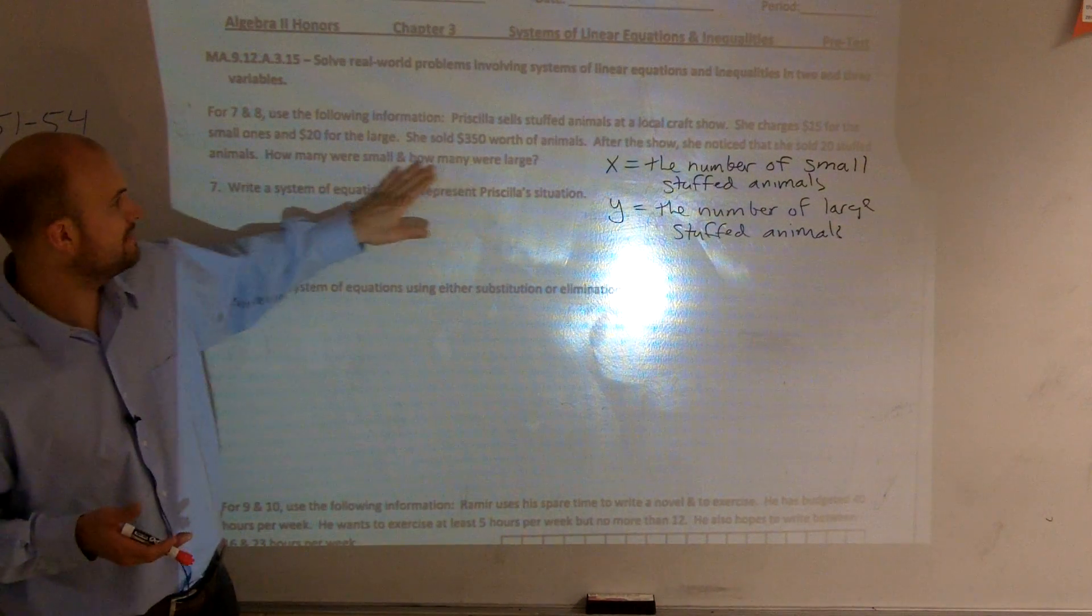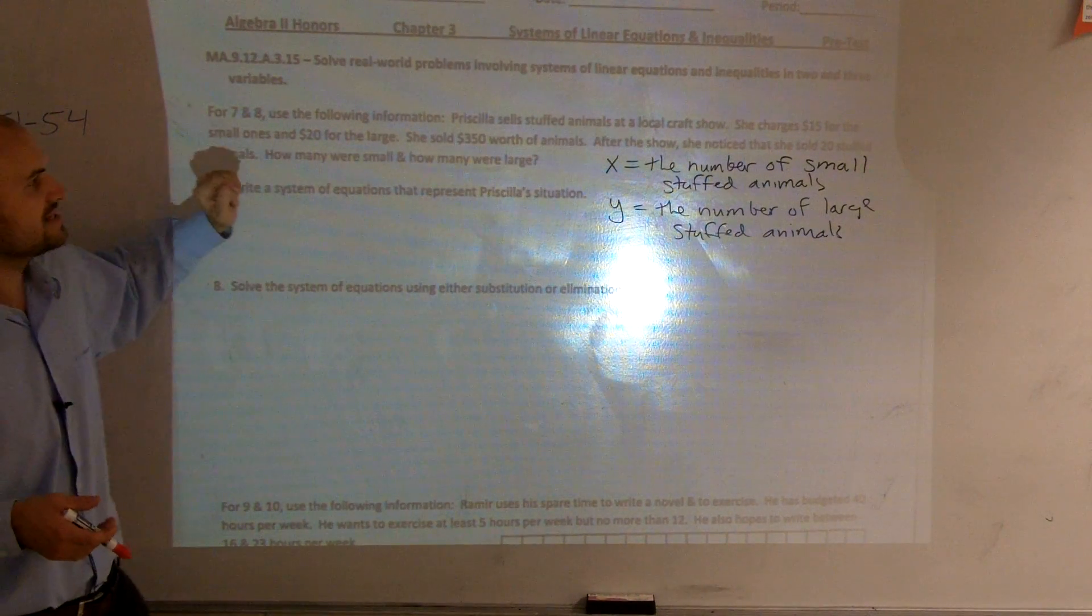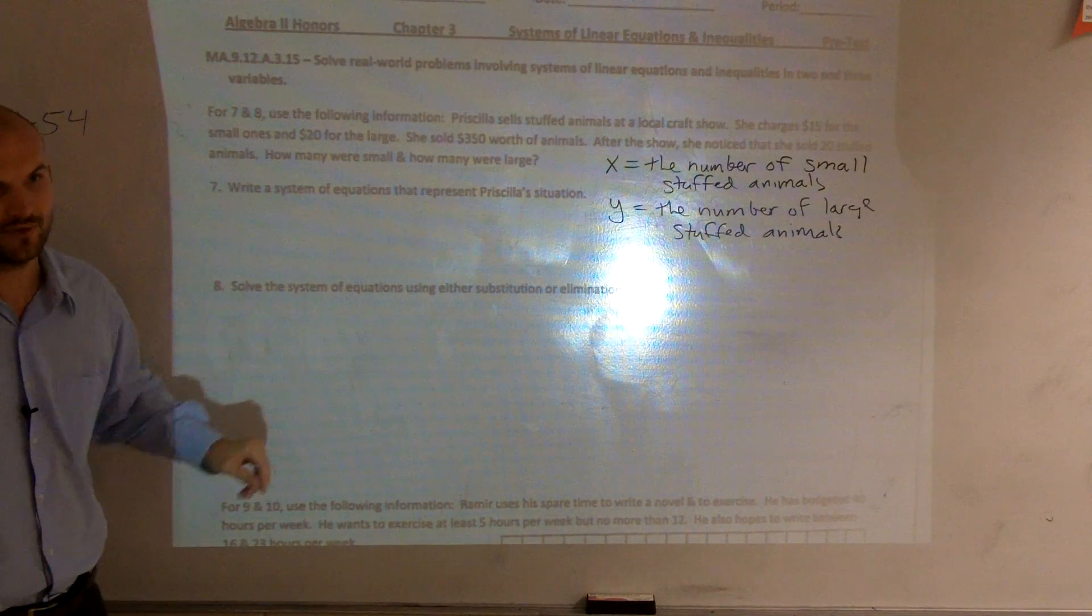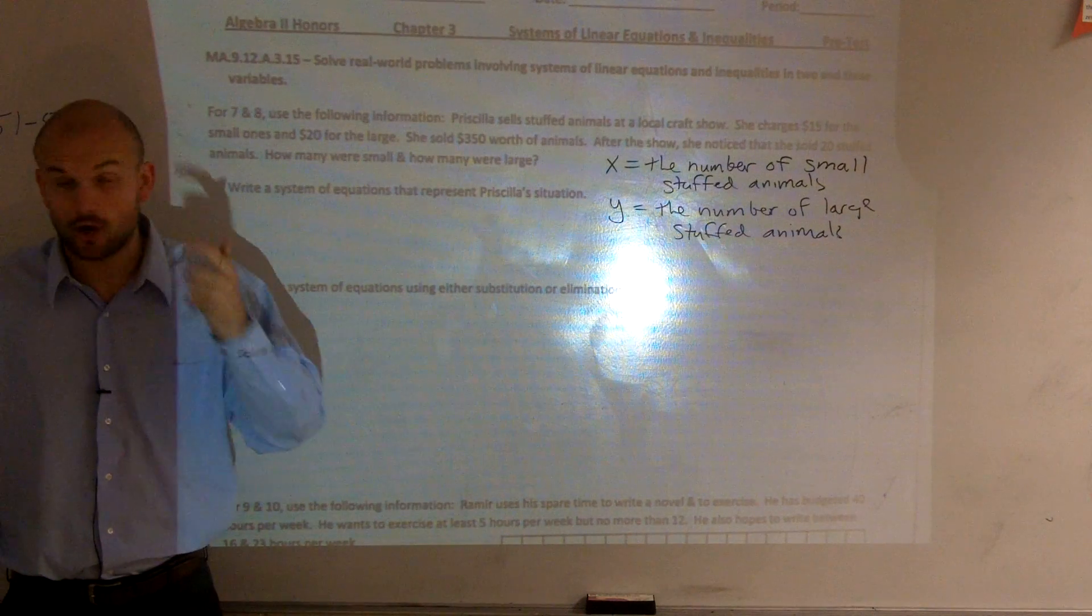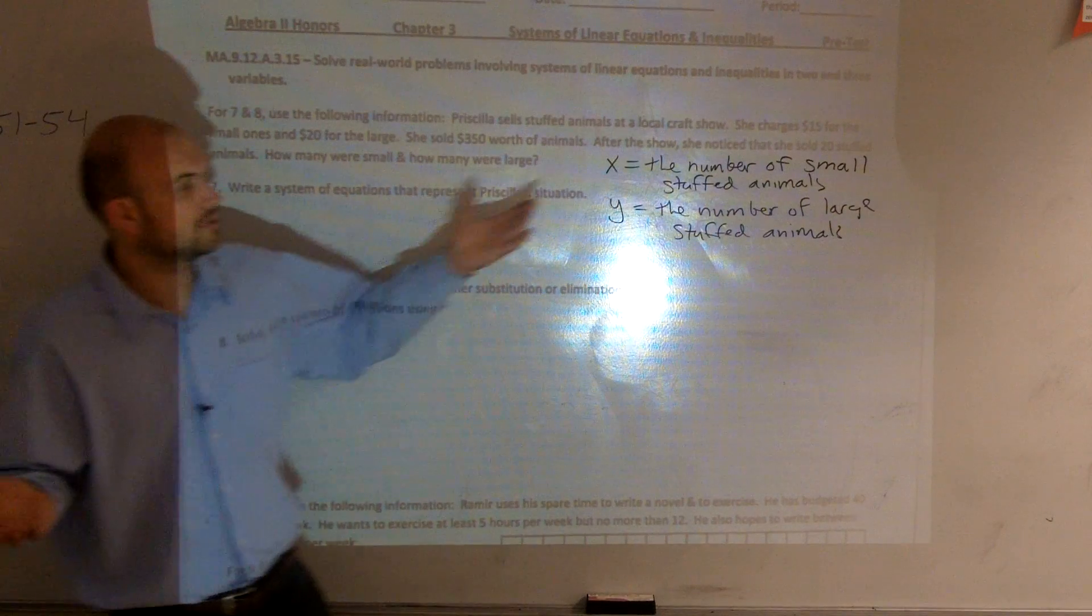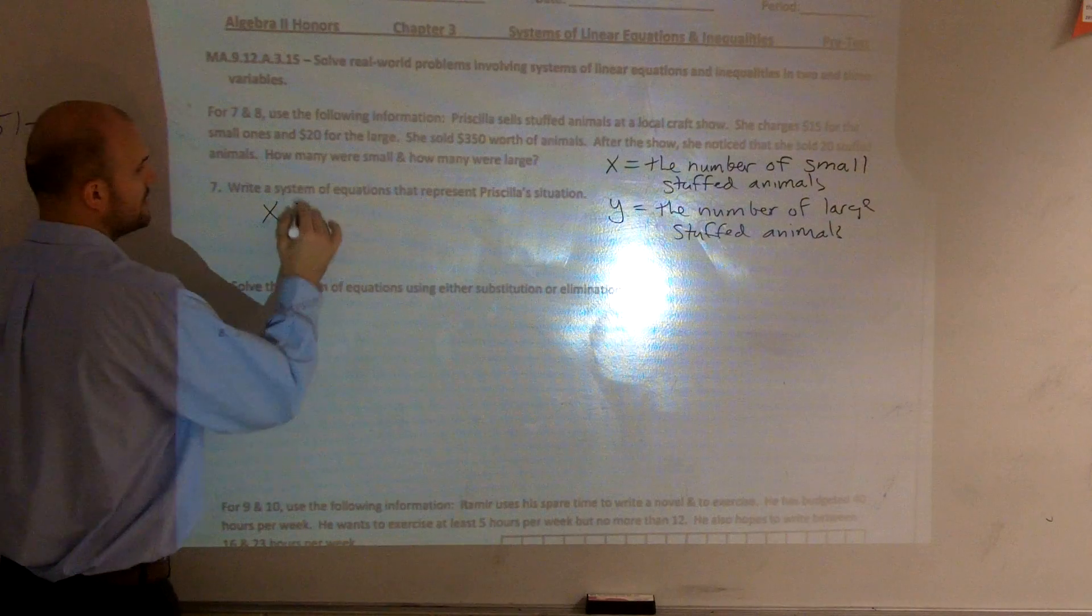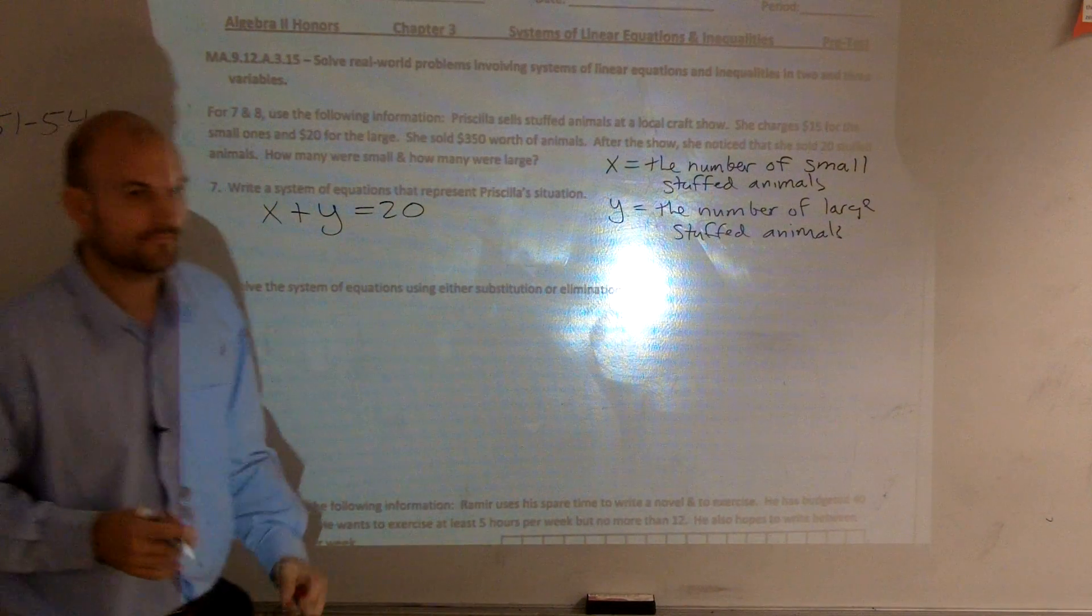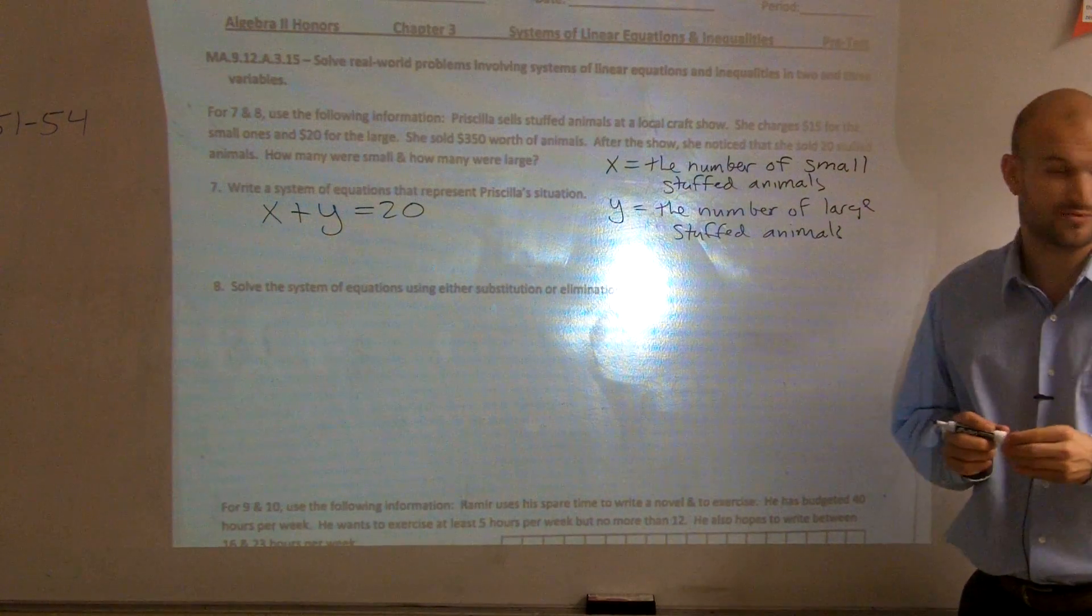I'm going to start reading backwards from my sentences. We already covered out what we didn't know. The next sentence said, after the show, she noticed that she sold 20 stuffed animals. Do we know how many large or small? No. But we know when we add them together, we get what? Twenty. So, we know we can write an equation: X plus Y equals 20. That's one equation.